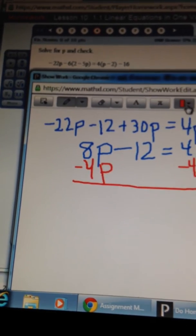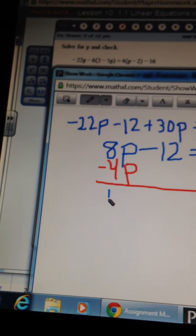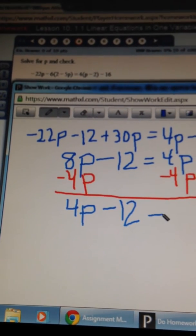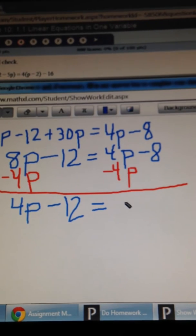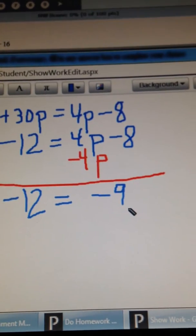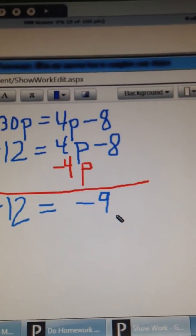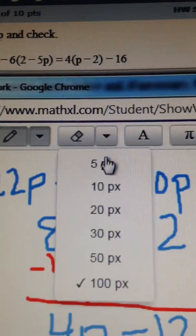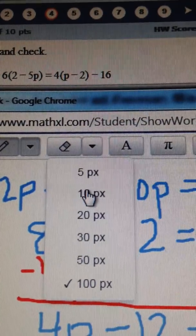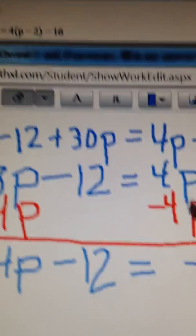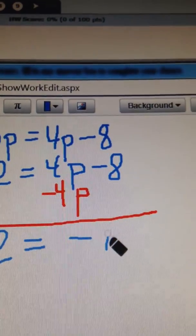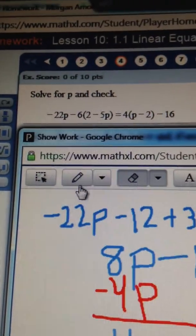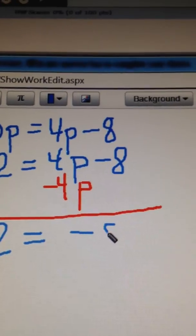So over here we have 4p minus 12 equal to negative 8. Now let's say you make a mistake along the way. No big deal. Go up here to the eraser and click on it. You might need to change the size of your eraser. I'll just choose a smaller eraser and just erase my number here and start again. Now to get back to the pencil, just click on the pencil again. And now we can put the right number, negative 8.